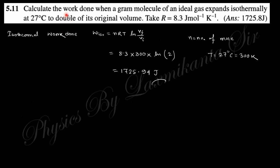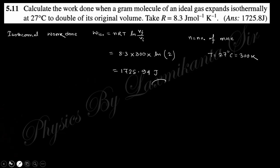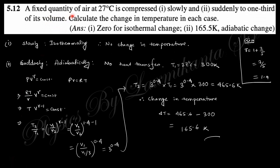Question 12: Calculate the work done when one gram-molecule of ideal gas expands isothermally at 27°C to twice its volume. So V₂/V₁ = 2, giving a factor of ln 2. Temperature is 27°C = 300 K. One gram molecule means one mole, so n = 1 and R = 8.3 J/mol·K. Substituting these values gives the final answer for work done.